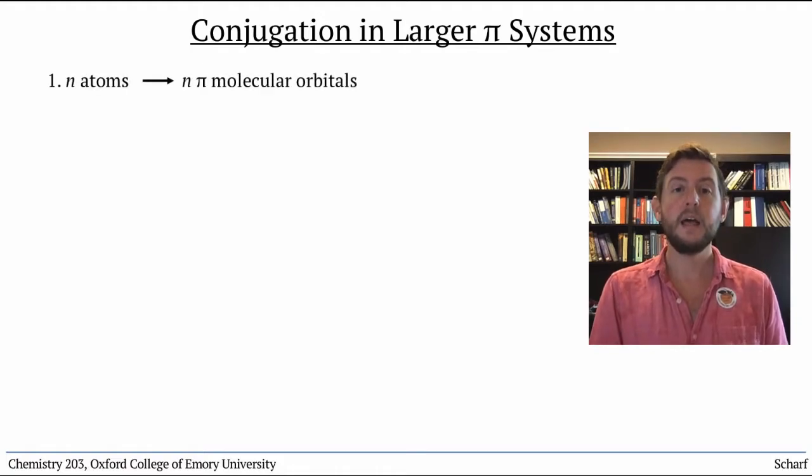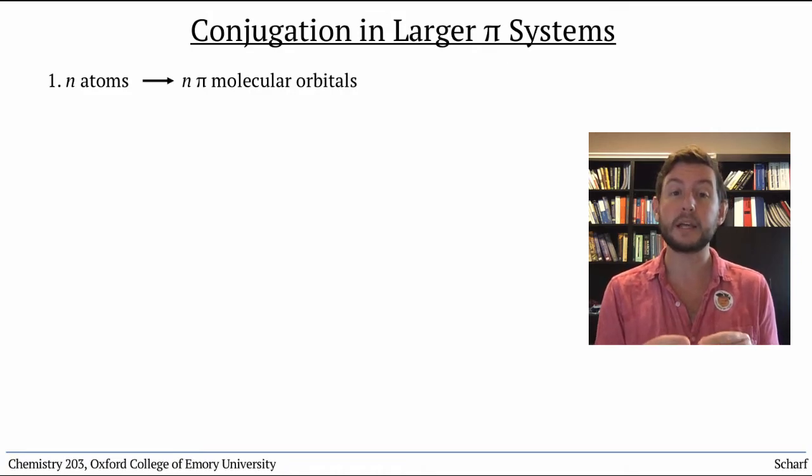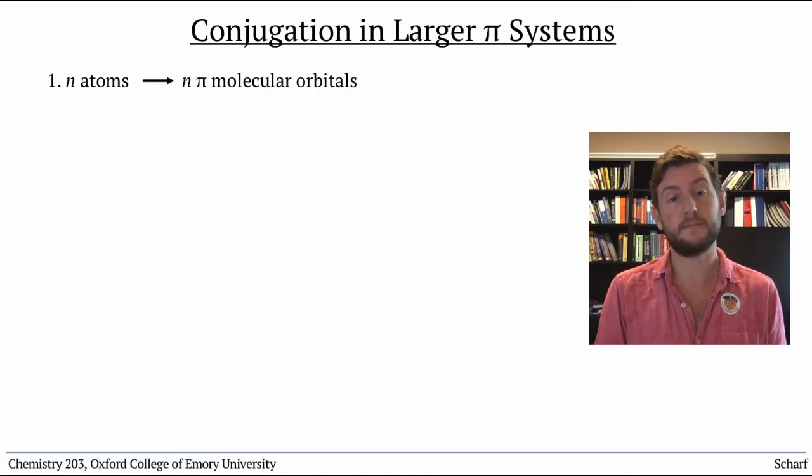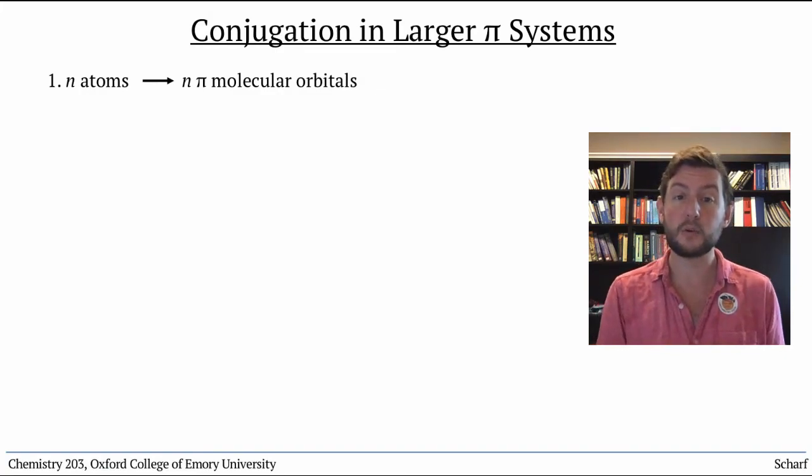Number one, the number of atoms in the conjugated system tells you the total number of molecular orbitals in the pi system. Three atoms means three total pi molecular orbitals.